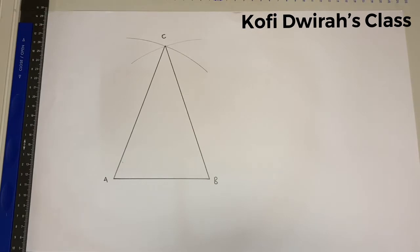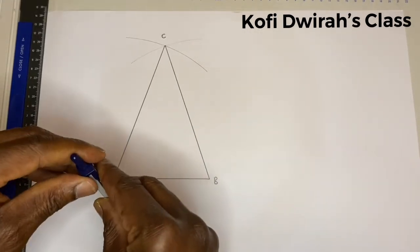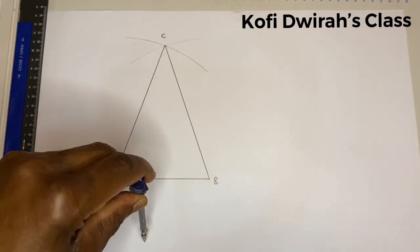So with your compass, you bisect... you have to bisect line AB. Bisect AB.